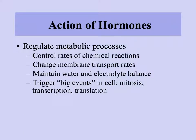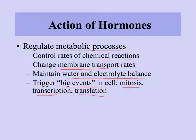Hormones do quite a few things in the body. You may think of hormones in relation to sexual development, but they're also a very important part of everyday regulation of metabolism. They may control the rates of chemical reactions or change how things move across the cell membrane. They're important in maintaining water and electrolyte balance — the homeostatic part of keeping all chemical components in the right proportions. Hormones also trigger big cellular events like mitosis or starting transcription and translation of a particular gene.